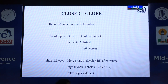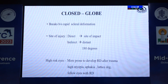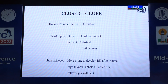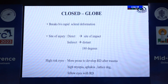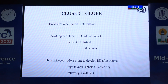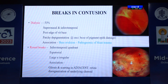In closed globe injury, breaks occur because of rapid scleral deformation. This occurs at the site of injury — the direct impact — or distant from the site of injury, the indirect impact, which occurs at 180 degrees. High-risk eyes include myopes, high myopic phakic patients with lattice degeneration, and cases with fellow eye retinal detachment.